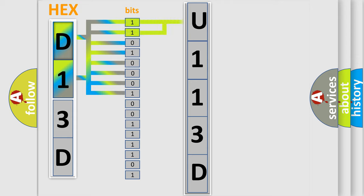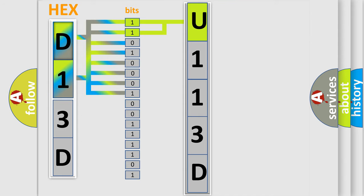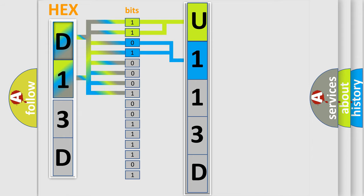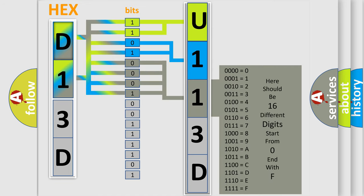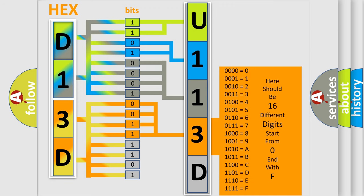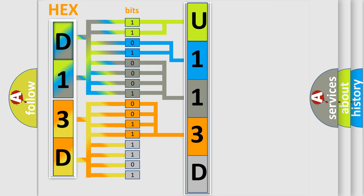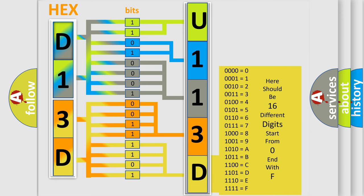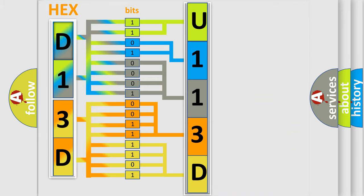By combining the first two bits, the basic character of the error code is expressed. The next two bits again determine the second character. The last four bits of the first byte define the third character of the code. The second byte is composed of a combination of eight bits. The first four bits determine the fourth character, and the combination of the last four bits defines the fifth character. A single byte conceals 256 possible combinations.